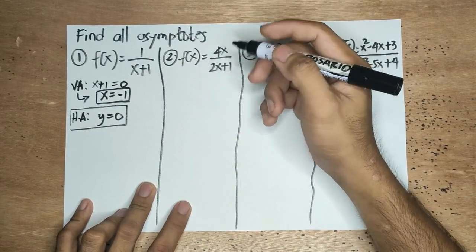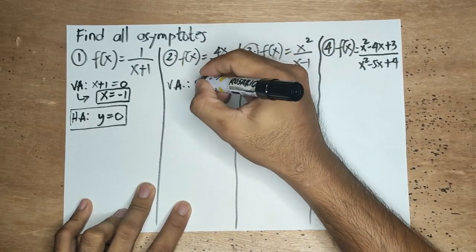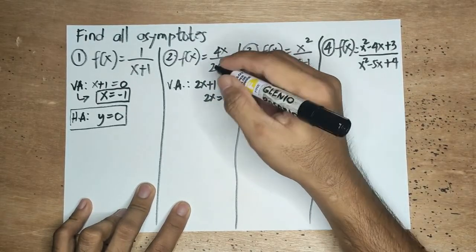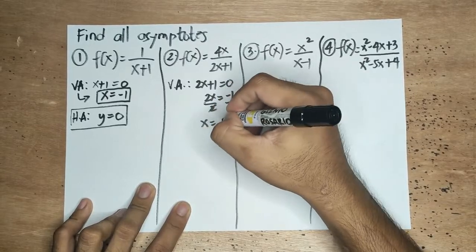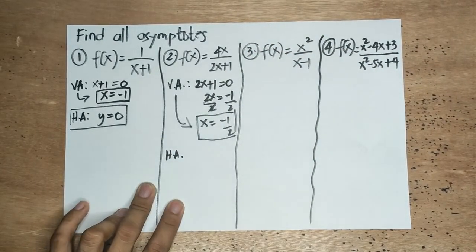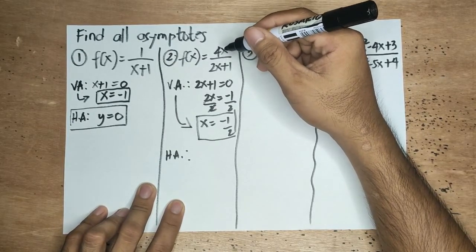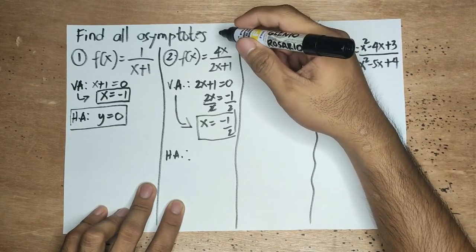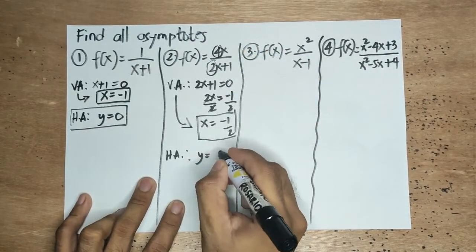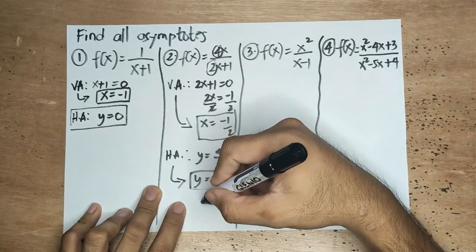Second example: f(x) is equal to 4x all over 2x plus 1. For the vertical asymptote, we bring down the denominator 2x plus 1, equate that to 0, then solve for the value of x. So 2x equals negative 1; divide both sides by 2, giving x is equal to negative 1/2. This is our vertical asymptote. For the horizontal asymptote, since the degree of the numerator is 1 and the degree of the denominator is 1 — magkapareho sila ng degree — we follow the second condition and consider the leading coefficients: y is equal to 4 over 2, so y is equal to 2. This is the horizontal asymptote. Walang oblique asymptote kasi mayroong horizontal asymptote.